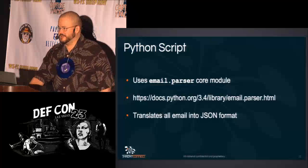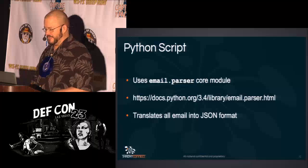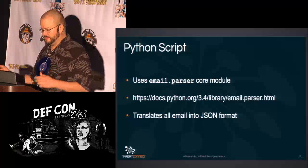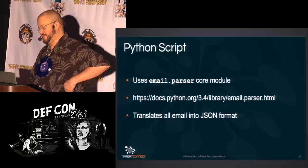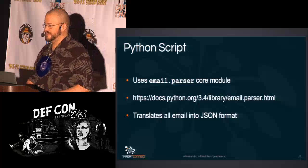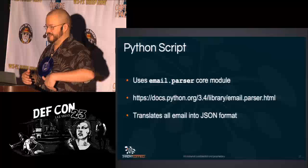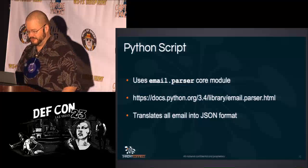The Python script is built using the email.parser core module in Python. I prefer Python 3, but this library is almost the same in both 2.7 and 3+. I use it to translate all email into JSON format — specifically the headers — so that they are divided up into key-value pairs. They're already key-value pairs in email format, but it's a flat text file; translating to JSON makes it more usable, especially with Elasticsearch.